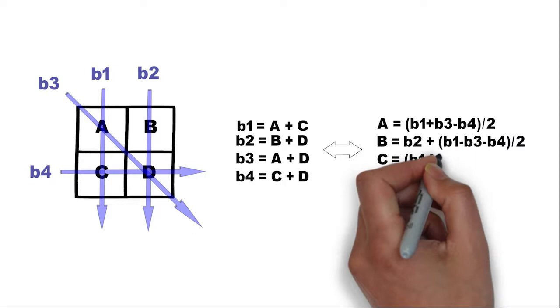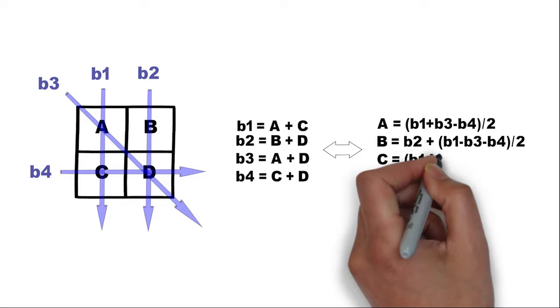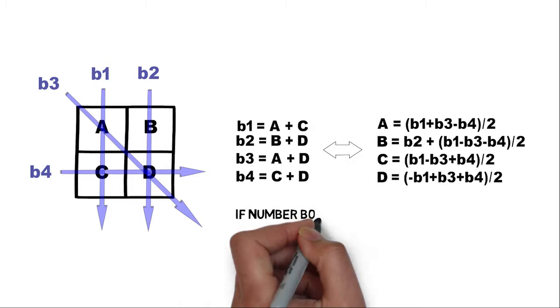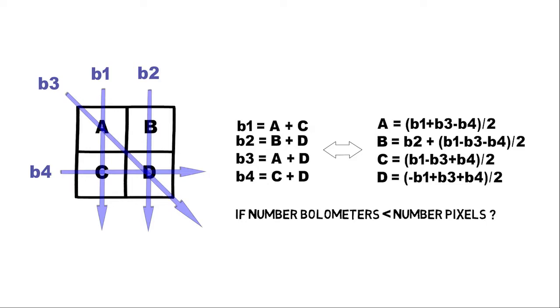But, what happens if this is not possible? Can you correctly determine the values of 4 pixels with just one bolometer? For example, b1? The answer is no, you can't, since there are in fact infinite solutions. So, how do we find the best one? This is exactly where Tikhonov regularization enters.